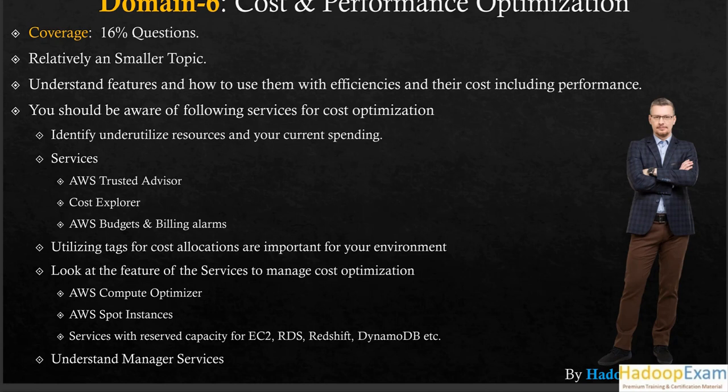Services that help with cost optimization include AWS Compute Optimizer and AWS Spot Instances. Reserved capacity for services like EC2, RDS, Redshift, and DynamoDB is also important. When you reserve capacity in advance it is generally cheaper compared to on-demand pricing, which can be more expensive.